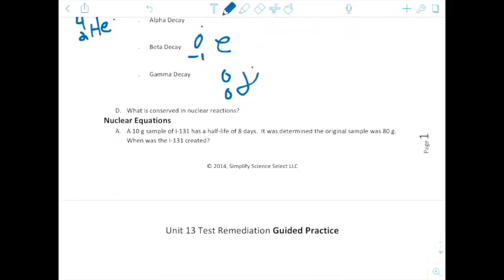Moving on to nuclear equations, talking about half-life. It says a 10 gram sample of iodine-131 has a half-life of eight days. And what half-life means is just the amount of time that it takes for half of the sample to decay. Now, it was determined that the original sample was 80 grams. When was the iodine-131 created? And so we started with 80 and now we're at 10. So a half-life would be, one half-life is when 80 gets divided by 2 and it turns to 40 grams.